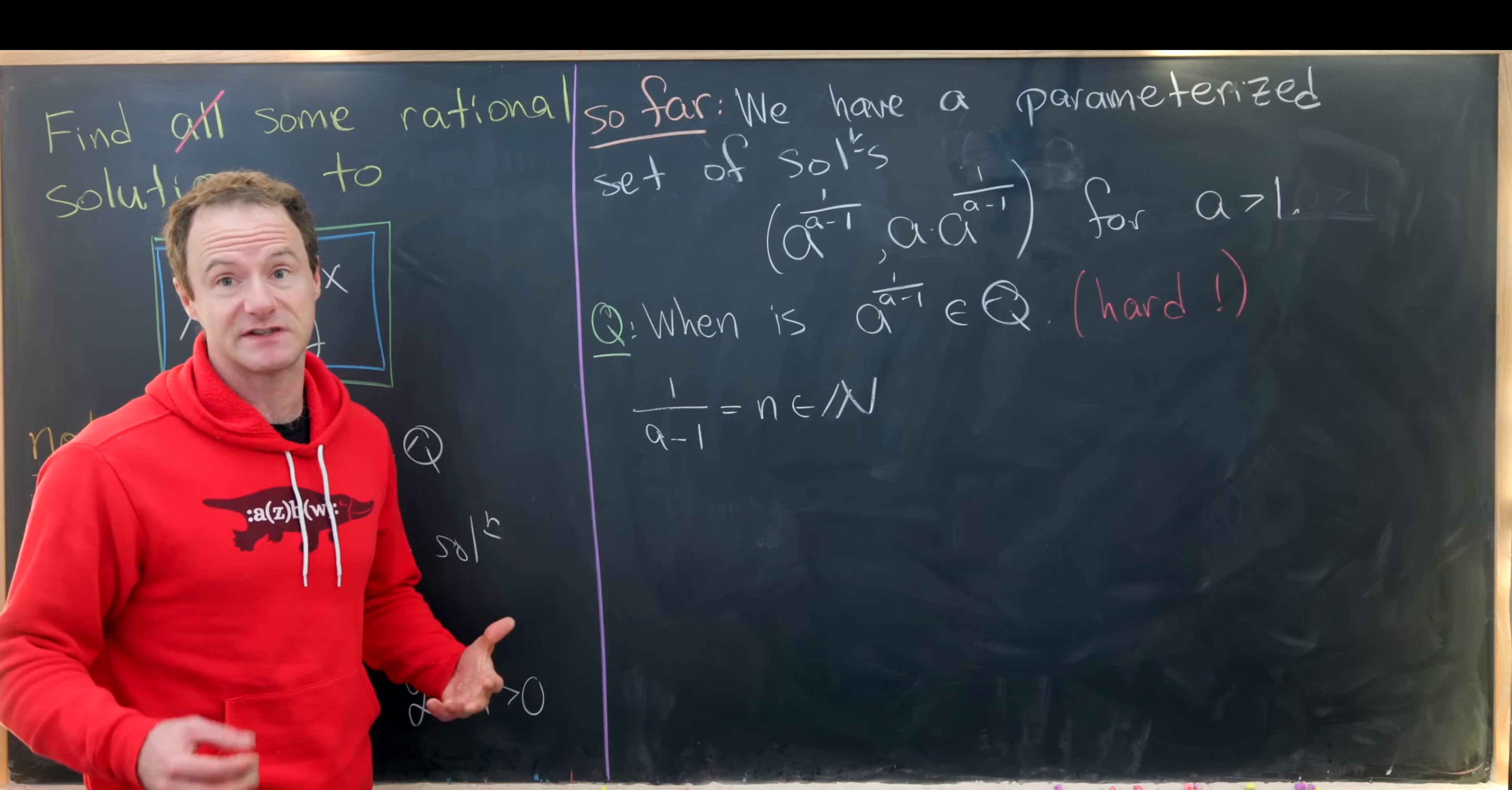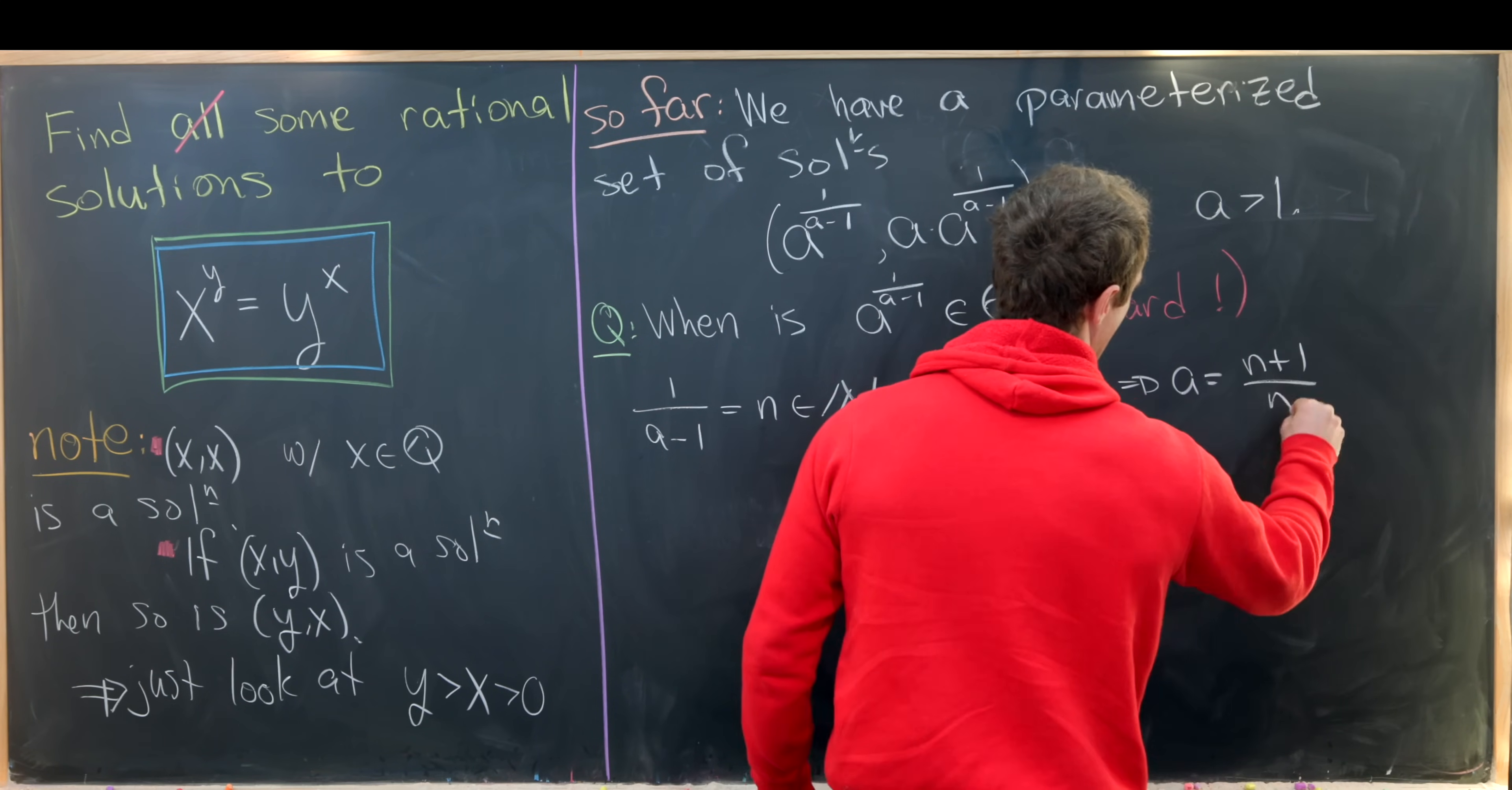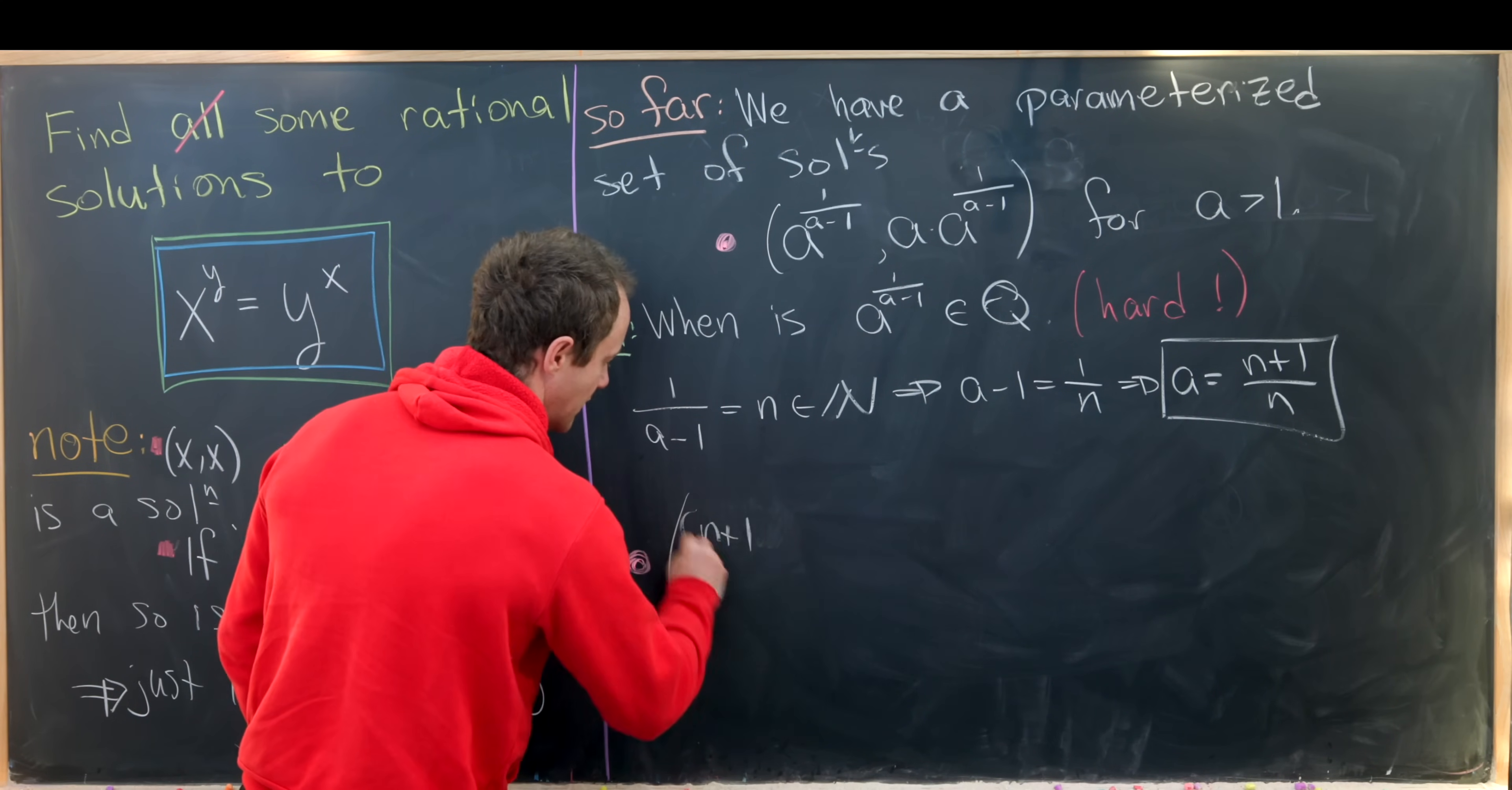So now we just need to solve this for a in terms of n, and we'll have some sort of idea for the shape of some of these rational solutions. So let's see, maybe we could invert these. So we'll get a minus one equals one over n. But let's see, that means that a is equal to n plus one over n after giving ourselves a common denominator and stuff.